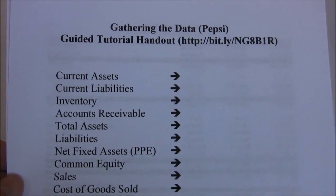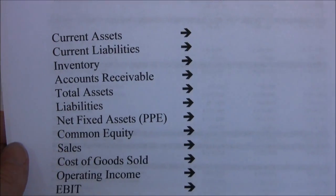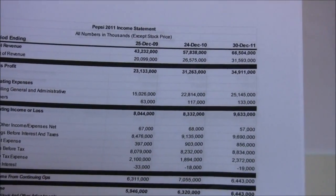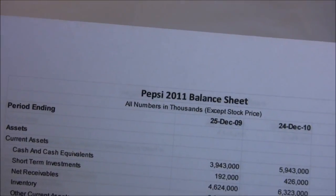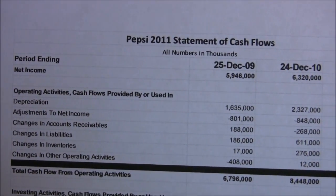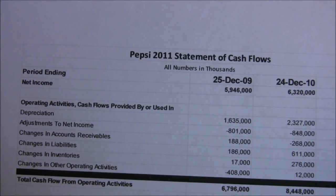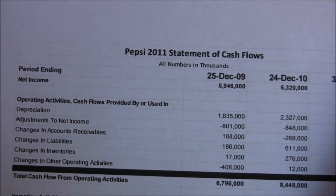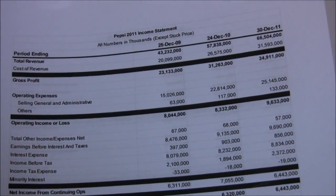We're just gathering this data to give an overview of how to do the calculations. I've got a handout we're going to use to record the various values we need for all the ratios, and then we have the actual financial statements: the Pepsi 2011 income statement, balance sheet, and statement of cash flows. I'd really encourage you to get out your guided tutorial — or if you're not enrolled, go to the bit.ly address and print these off so you have them next to you.